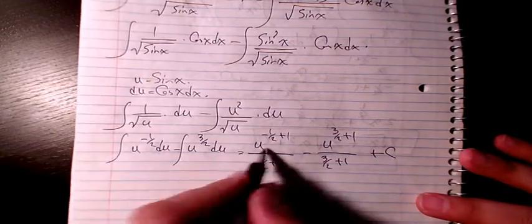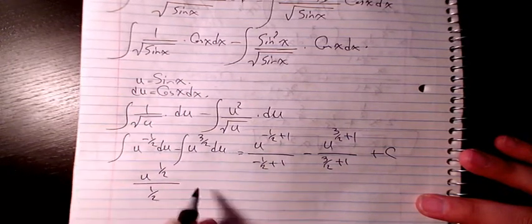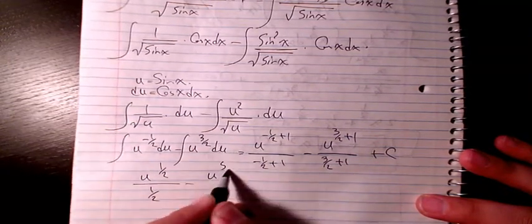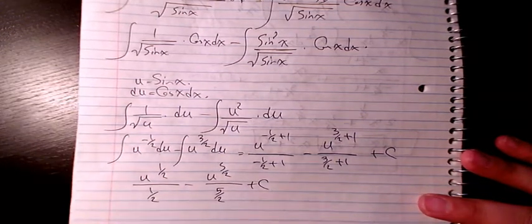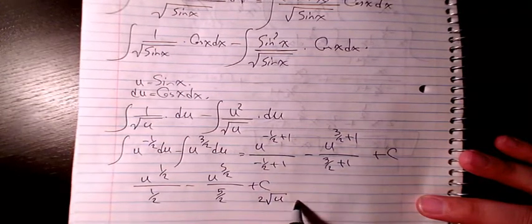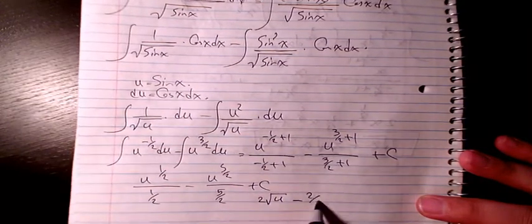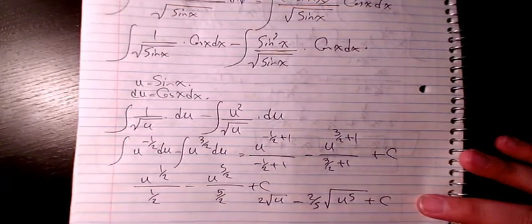So it's going to be u to the power of 1/2 divided by 1/2, minus u to the power of 5/2 divided by 5/2, plus c. So it will be 2 square root of u minus 2/5 square root of u to the power of 5 plus c.